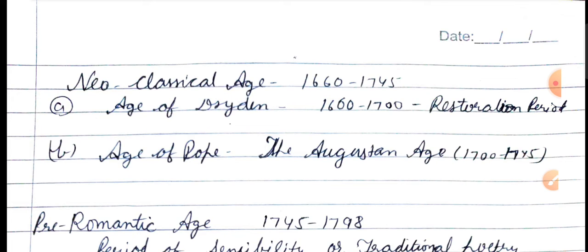The Neoclassical age is from 1660 to 1745. The Age of Dryden is 1660 to 1700, which is called the Restoration period. Then it is divided into the Age of Pope — Alexander Pope — and the Augustan age, which is 1700 to 1745. The Neoclassical age represents a classical sensibility, emphasizing reason and high social status.